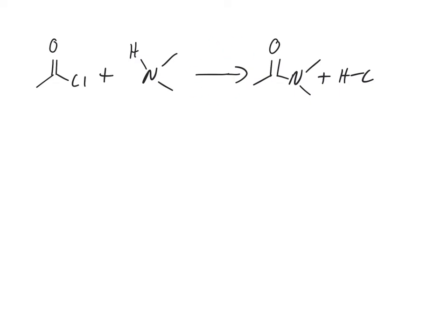So what can happen here, pretty simple. The nitrogen reacts with the carbon of the carbonyl group, do that addition, which creates of course a tetrahedral intermediate.